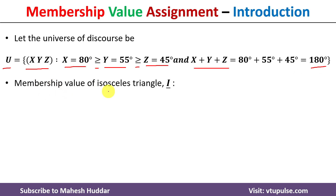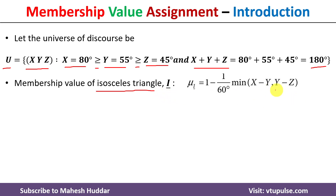Now we will find the membership value of different triangular shapes. First, consider the isosceles triangle — that is, the fuzzy set I. The membership value of the isosceles triangle is always equivalent to 1 minus (1 divided by 60 degrees) multiplied by the minimum of (x minus y) and (y minus z).